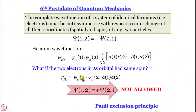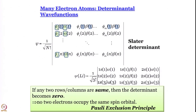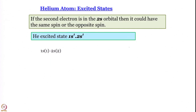If the two electrons in the 1s orbital had the same spin, we would get ψ₁ₛ(1)ψ₁ₛ(2) multiplied by α(1)α(2), which gives ψ(1,2) = ψ(2,1) — and that is not allowed. That is what leads to the Pauli exclusion principle. We have taken this idea forward by looking at Slater determinants of larger atoms as well — and this is where we stopped in the last module.